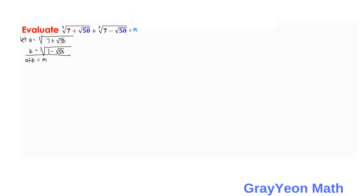Next, we take the cube of each equation. So a cubed equals 7 plus square root of 50, and b cubed equals 7 minus square root of 50. Adding them, we get a cubed plus b cubed equals 14, because the positive and negative square root of 50 terms cancel out.